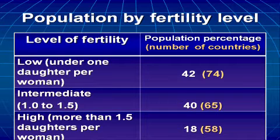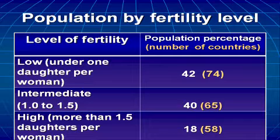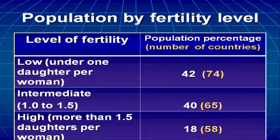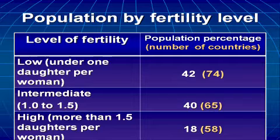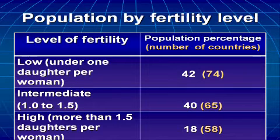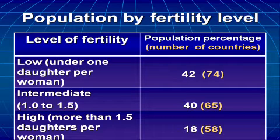Then we have the intermediate fertility countries, defined as those where the number of daughters per woman goes between one and one and a half on average. They account for 40% of the population today, and include 65 countries. And lastly, we have the high fertility countries, where women are having on average more than one and a half daughters per woman. They account for just 18% of the population, and there are 58 countries.